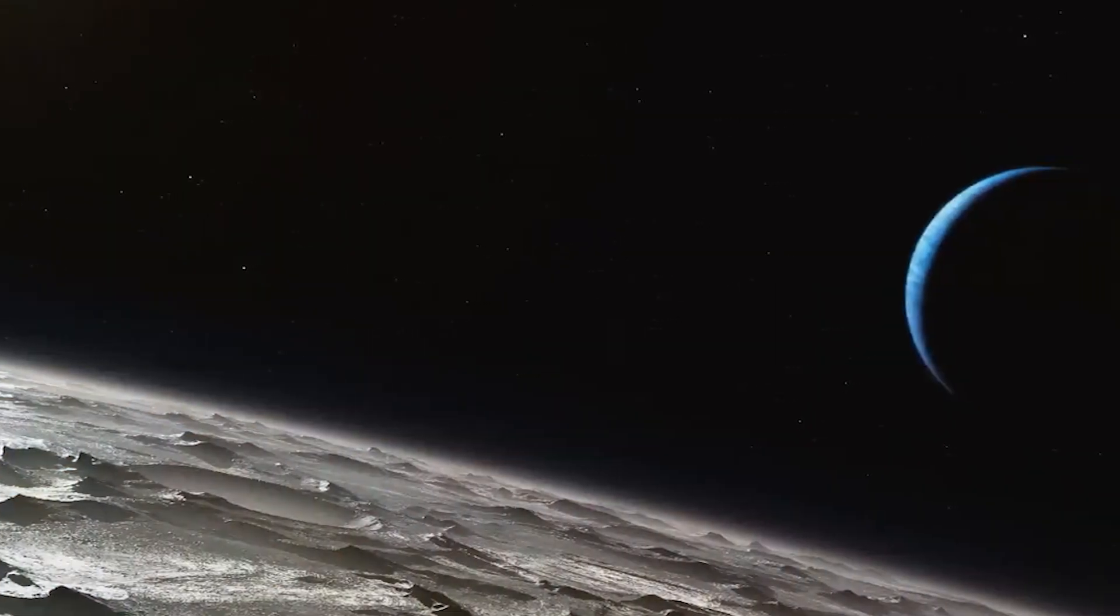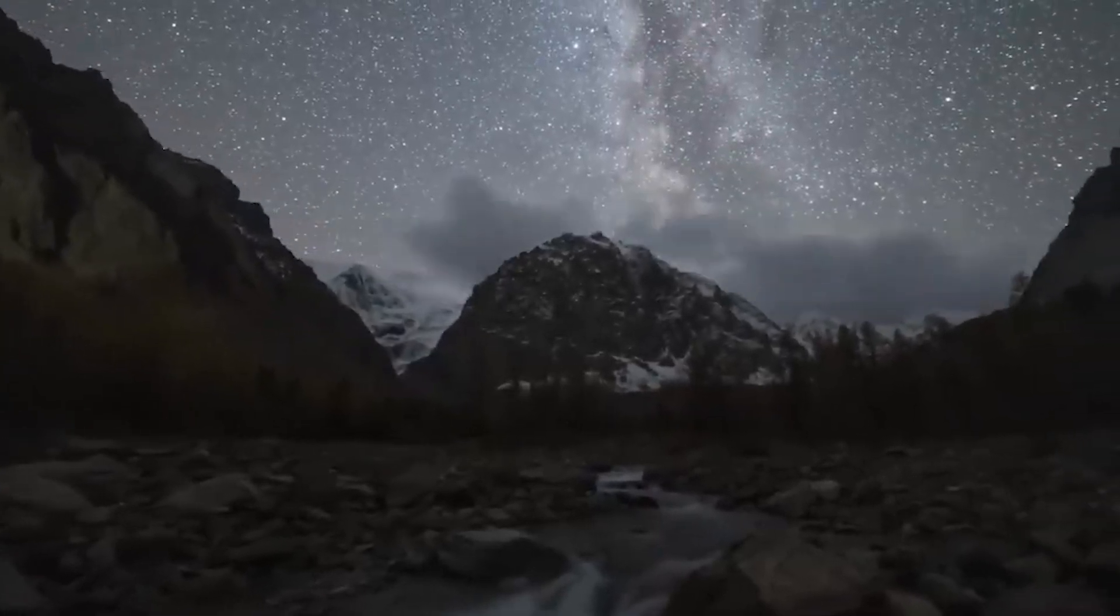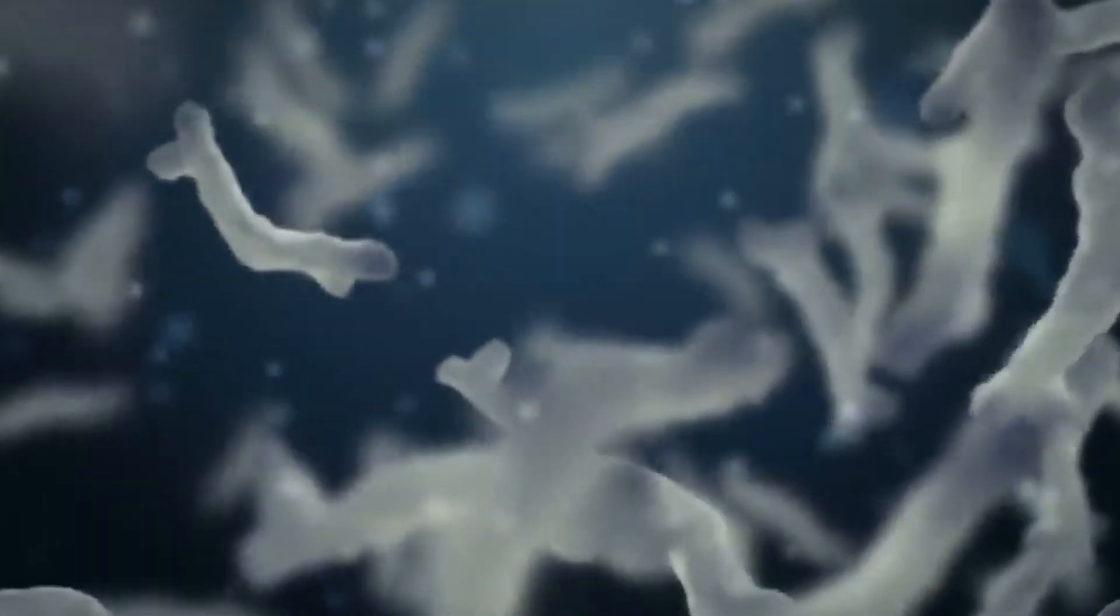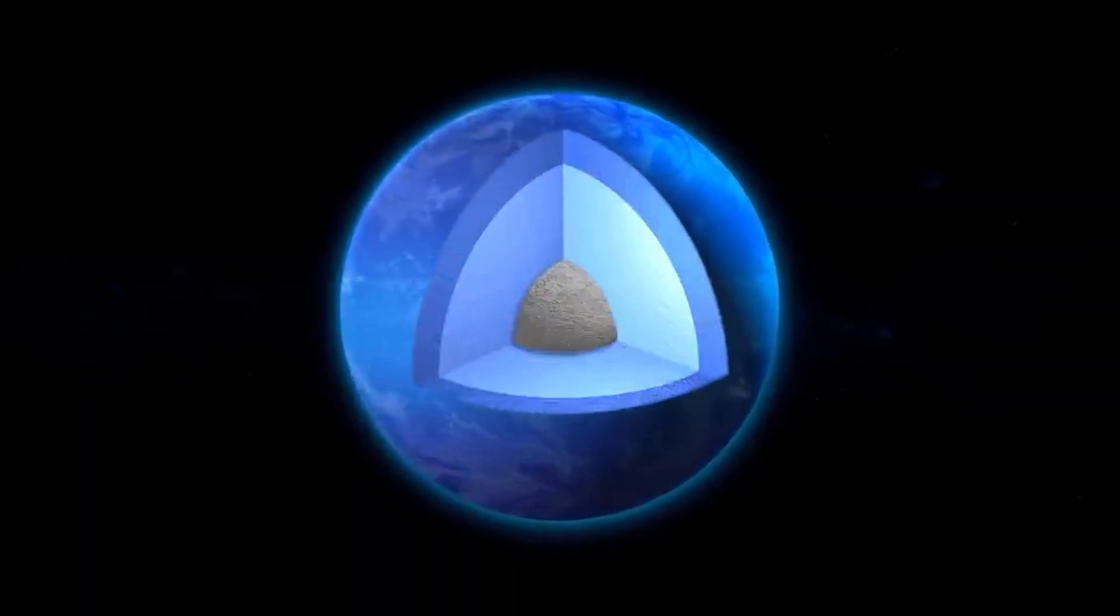Neptune doesn't have a solid surface like Earth. Instead, its thick atmosphere transitions into a dense, slushy mantle made of methane and ammonia ice. Deep beneath this layer is thought to be a rocky core.